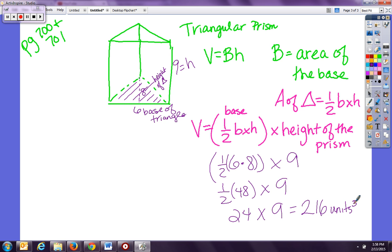So the example in the book uses the same numbers but a different looking figure. Their figure looks like this. So they have a triangular prism that way.